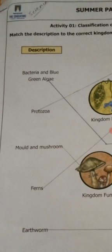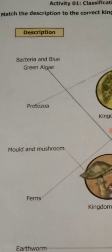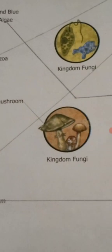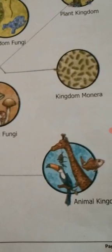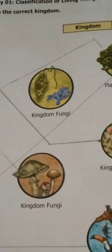According to the description, we match two kingdoms. The first description is bacteria and blue-green algae, so it matches to kingdom Monera. Next, protozoa also matches to kingdom Monera.